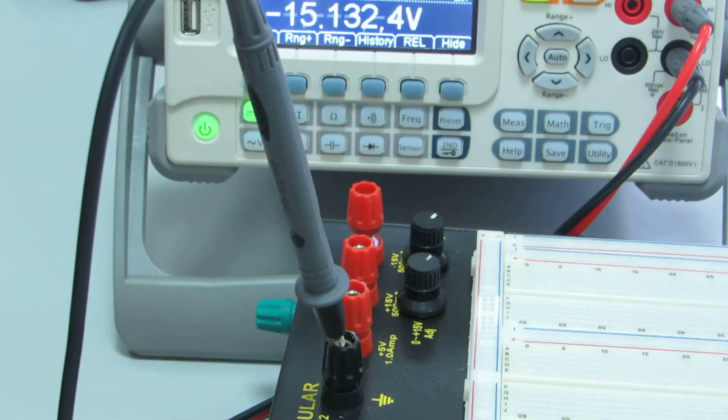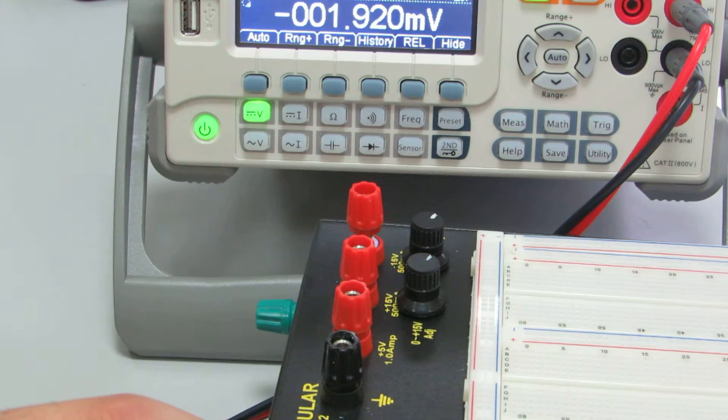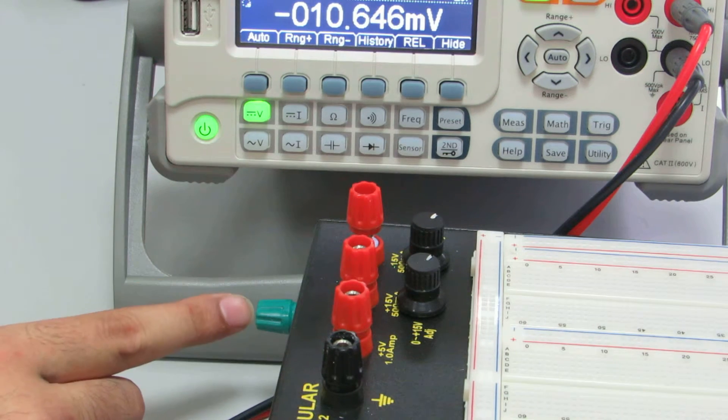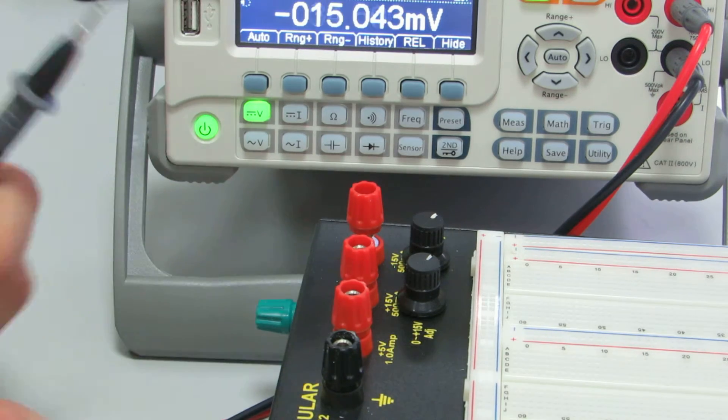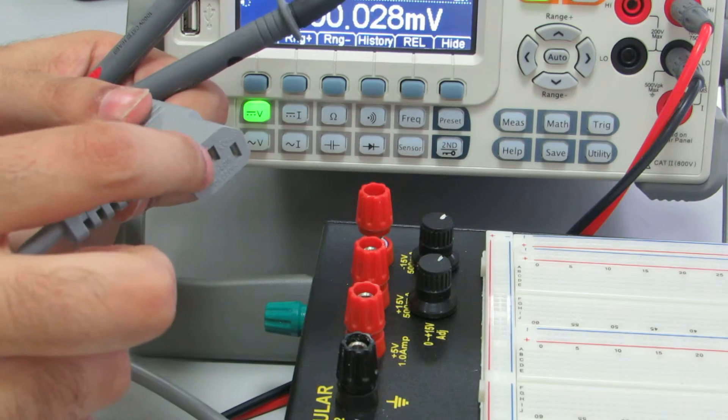Now one thing that this has that the first one didn't have is this: an earth terminal. What is an earth terminal? This port directly connects to the ground terminal in your socket, which is this one.